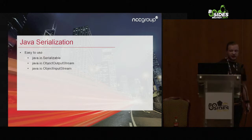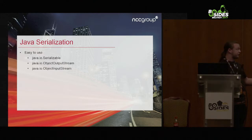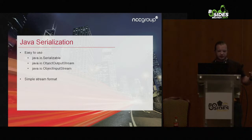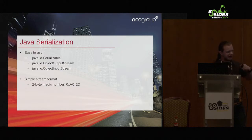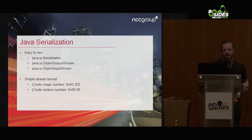The built-in serialization in Java is easy to use. In order to make a Java class serializable, we just implement the interface java.io.Serializable. Once we've done that, we can pass an instance of that runtime object to an ObjectOutputStream and write it to a file or over a network connection. To read it back, we use an ObjectInputStream. That's all there is to it — it's really easy to use.